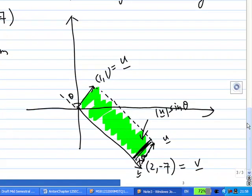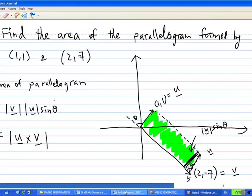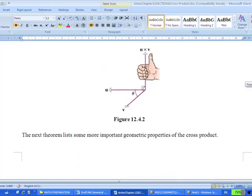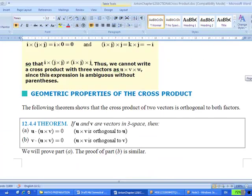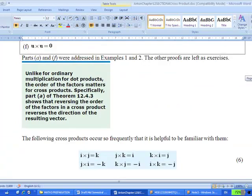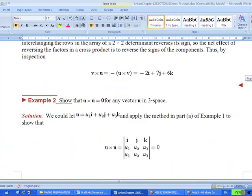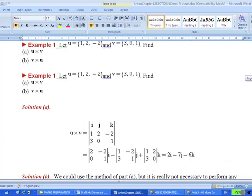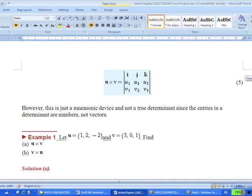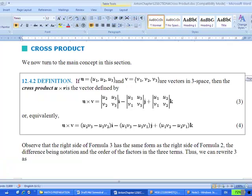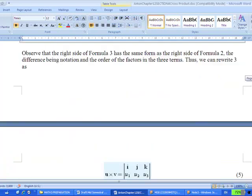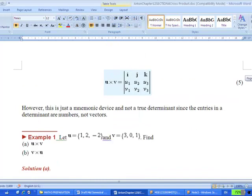So how do I find the length of u cross v? First, you must know how to find u cross v. In the earlier section of Section 4, it says that if you have two vectors u and v, where u = (u1, u2, u3) and v = (v1, v2, v3), then the cross product can be written as a three by three determinant with i, j, k in the first row, components of u in the second row, and components of v in the third row.